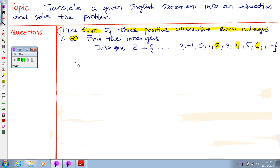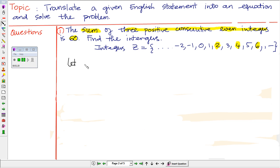What we're looking for is three even integers, and they must be positive, that add up to equal 60. I'm going to let n be a number in the set of natural numbers.